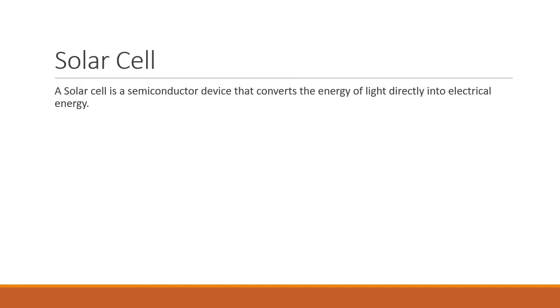It is a semiconductor device which converts light energy directly into electrical energy or we can say the light which is coming from the sun is converted into the electric signal or electric current by using the solar cell. And this property or this conversion of light energy into electricity is known as photovoltaic effect and solar cell works on the photovoltaic effect because it converts light into electricity.